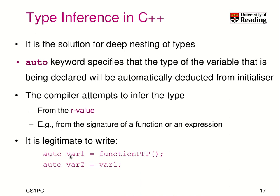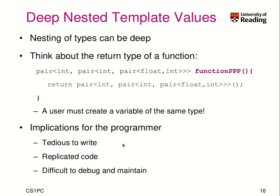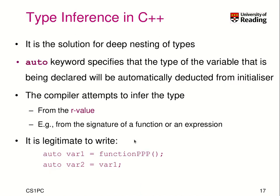I can say I have a var1 which has this auto type, and I have to initialize it with whatever function PPP returns. Now the compiler knows function PPP returns this long type, so it knows var1 is of this long type.